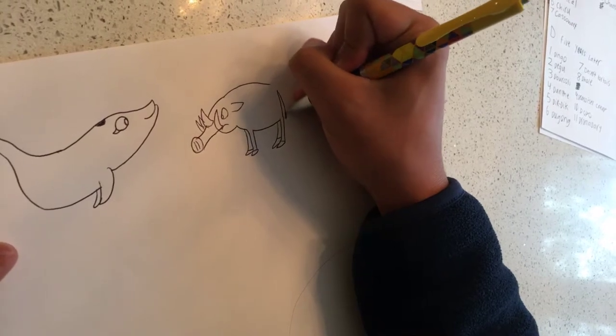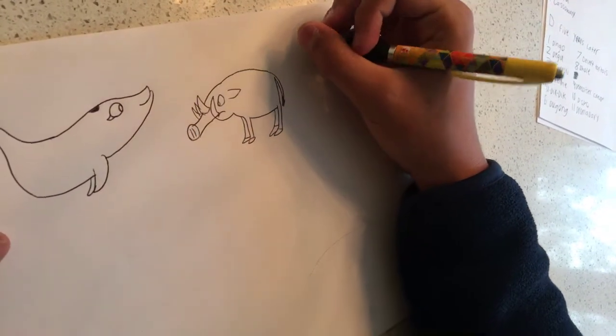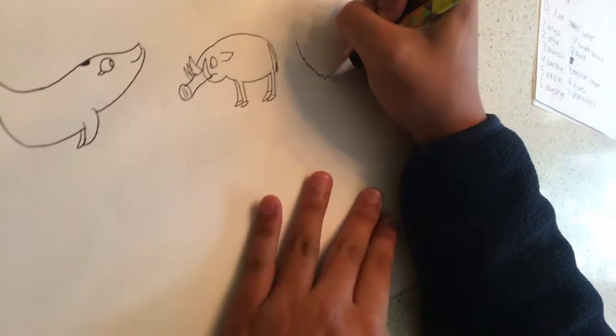To draw the babirusa, it needs a tail of a cow. B is for barbato sheep.